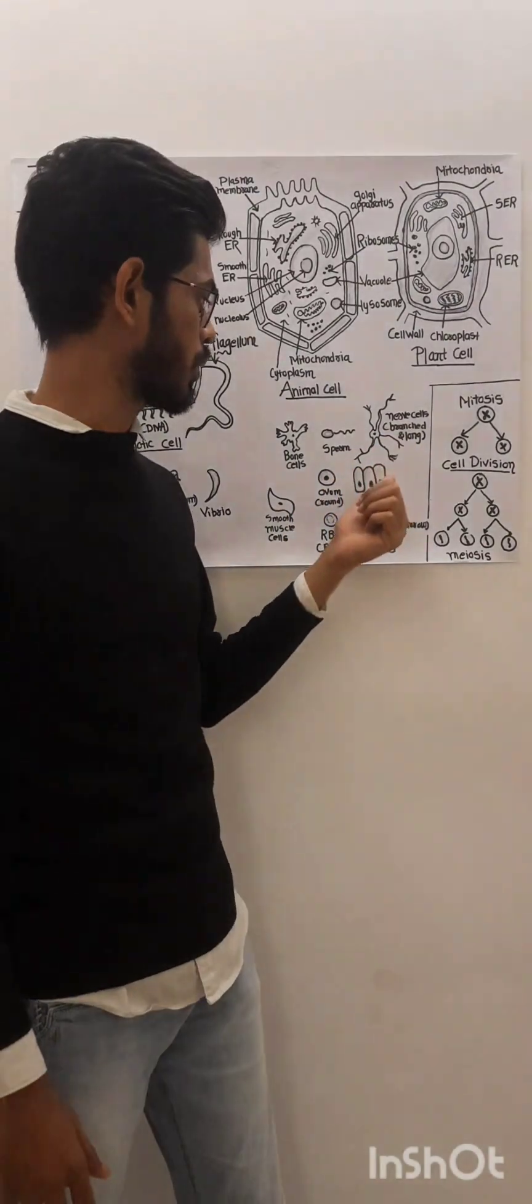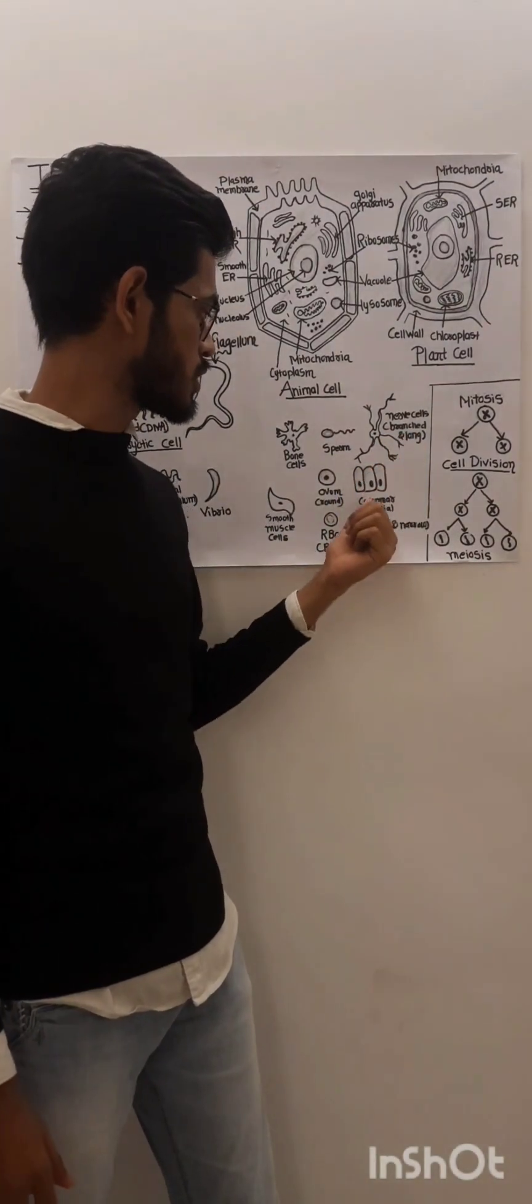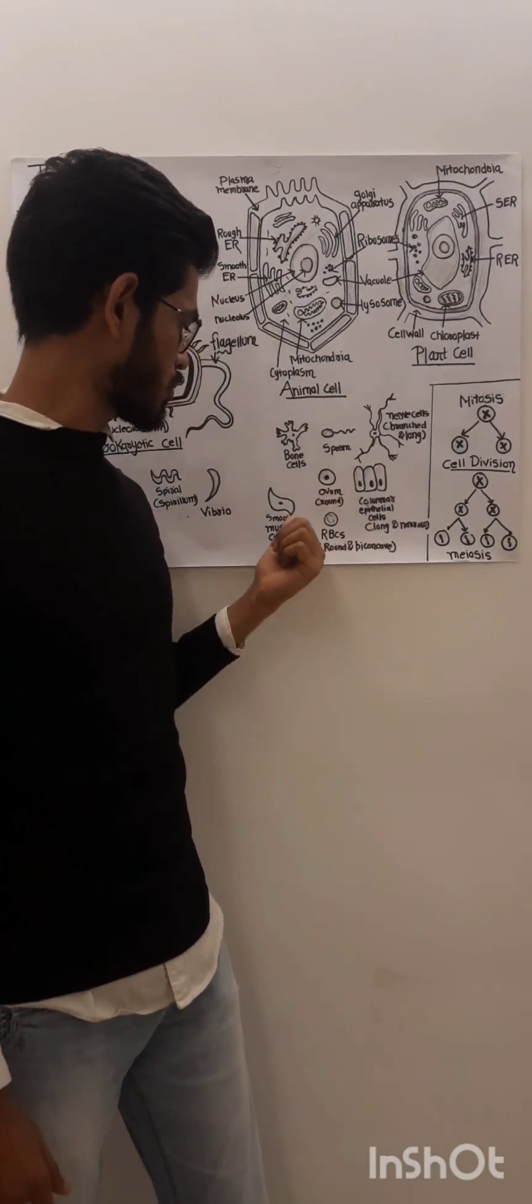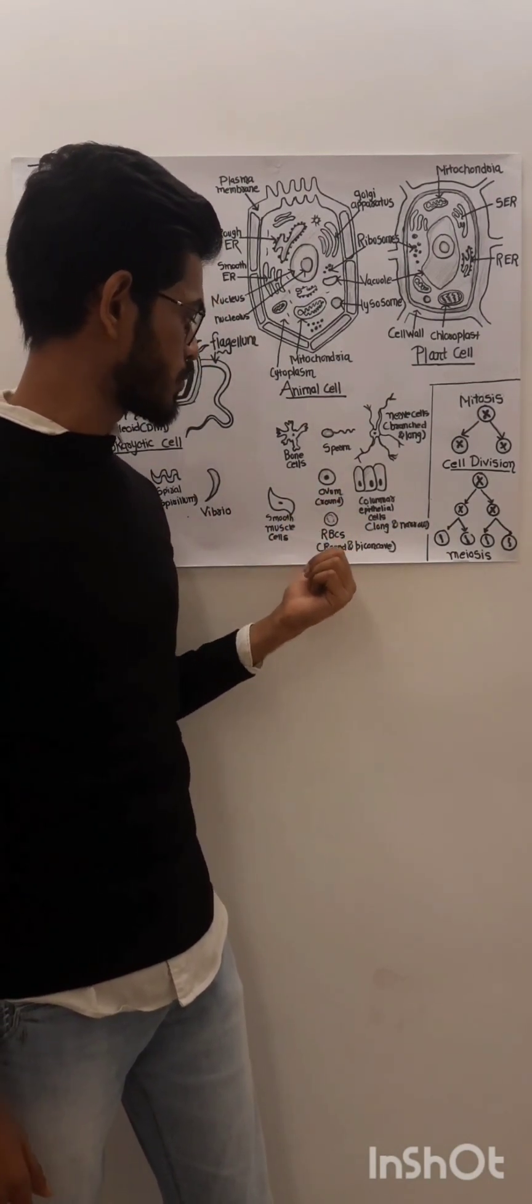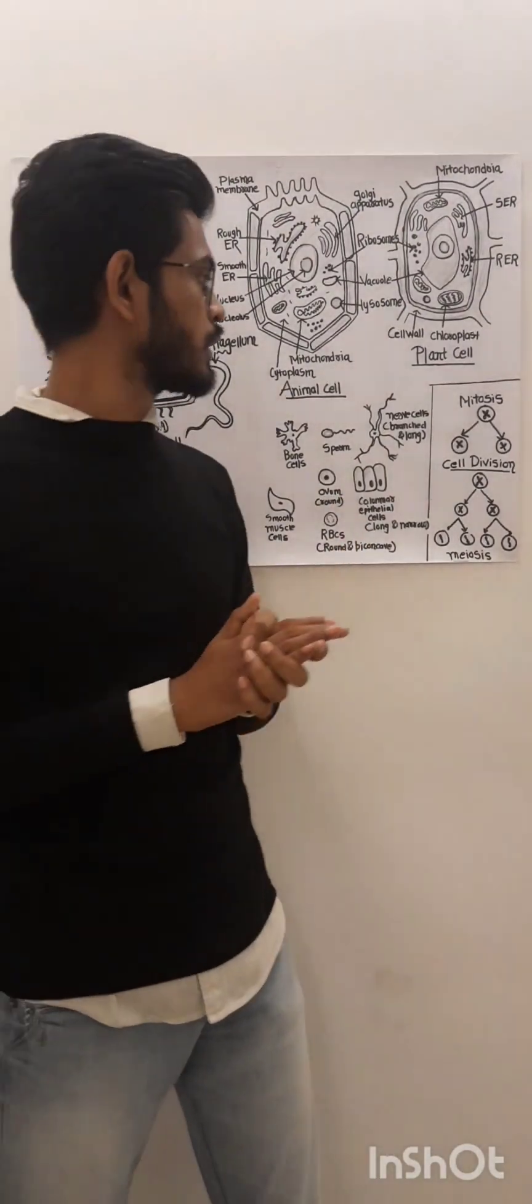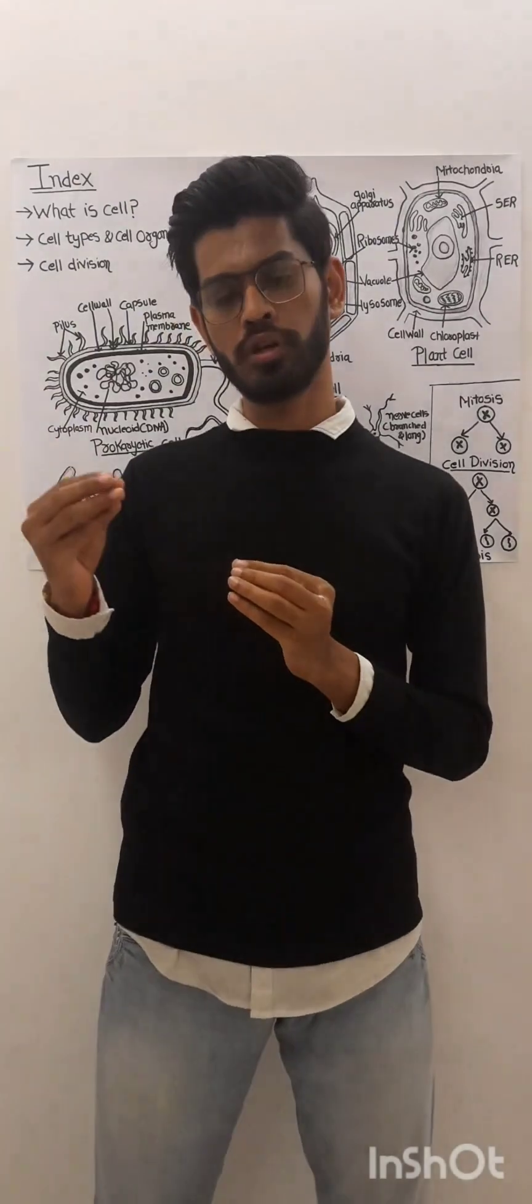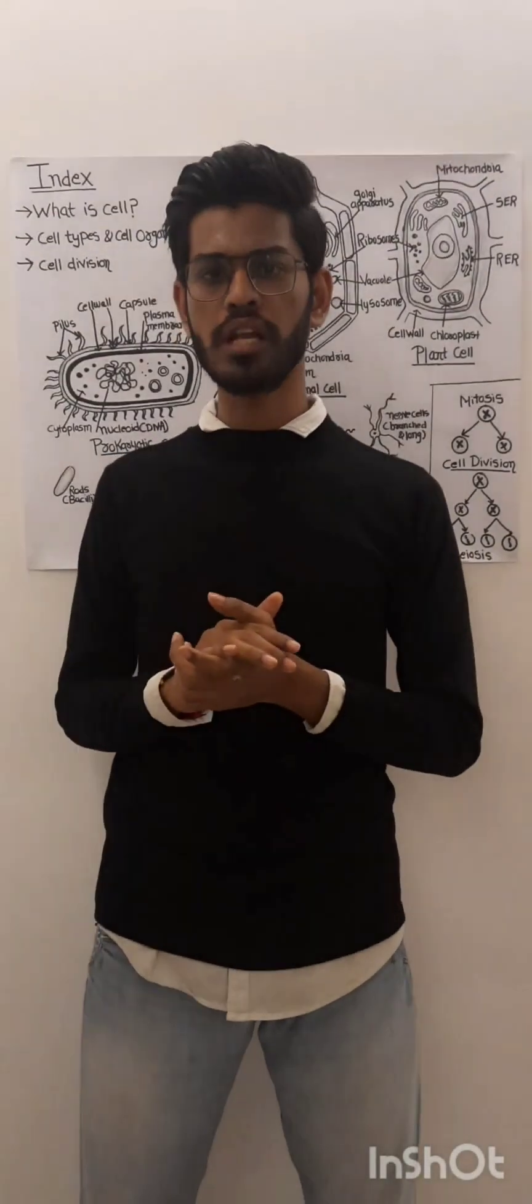These are the different types of cells that are found in human bodies: bone cells, fat cells, nerve cells which are round or branched and long, epithelial cells and columnar epithelial cells which are long and narrow. This is the smooth muscle cells, which are round and biconcave.